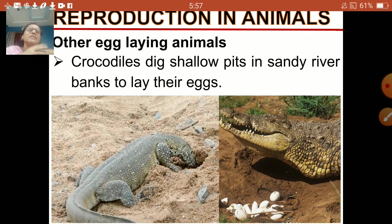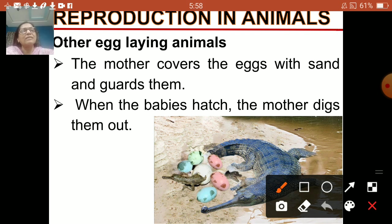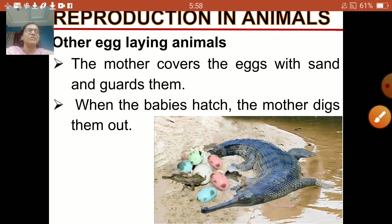When the babies hatch, the mother crocodile digs them out. The mother covers the eggs with sand and guards them, and when the babies hatch, the mother digs them out. You can see a crocodile coming out of an egg — such a beautiful picture. This is how crocodiles reproduce.